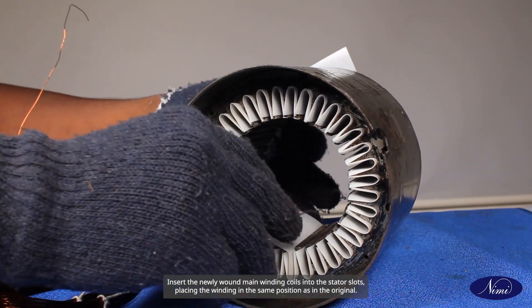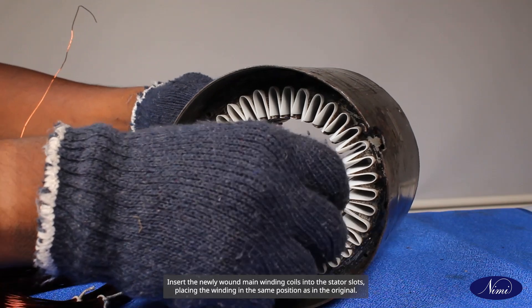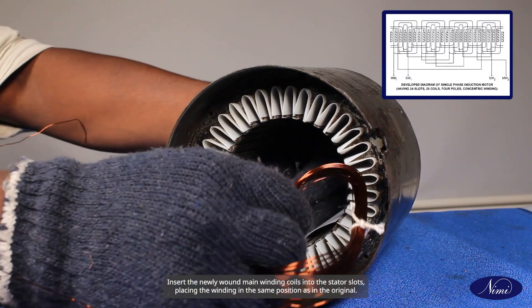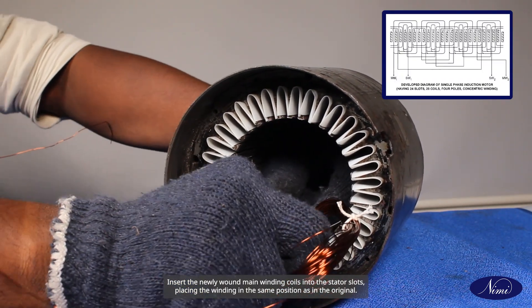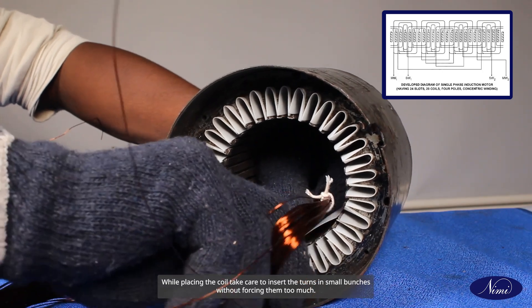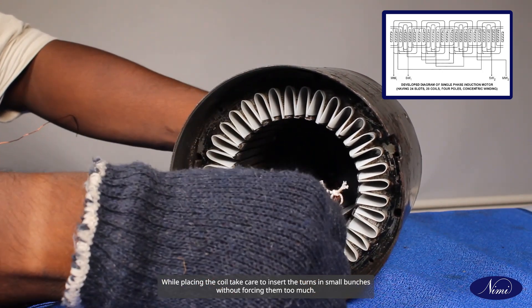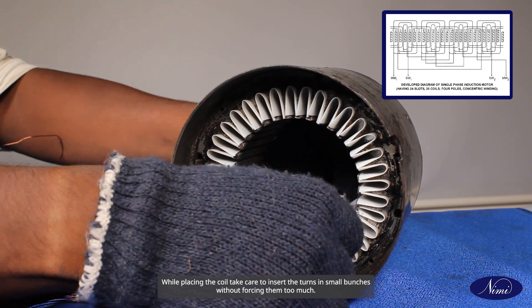Insert the newly wound main winding coils into the stator slots, placing the winding in the same position as in the original. While placing the coil, take care to insert the turns in small bunches without forcing them too much.